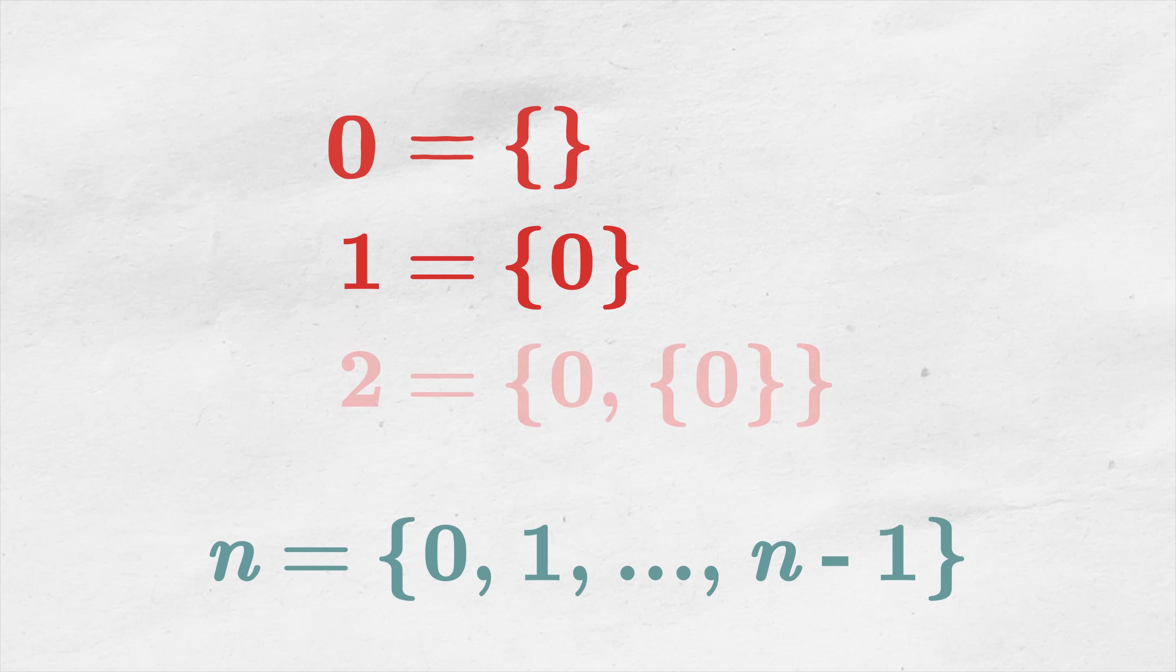We start with 0, which is the empty set. Then each next natural number is defined recursively, as a set that contains all previous numbers. So 1 is a set that contains 0, 2 is a set that contains 0 and 1, and so on. From this perspective we can clearly see that every natural number contains a 0, as in set containing another set. Thus, we can conclude without any doubt that every number is a duck number. Voila!